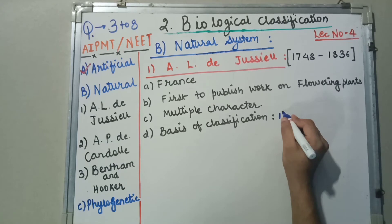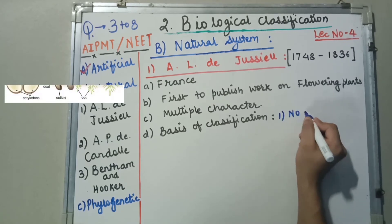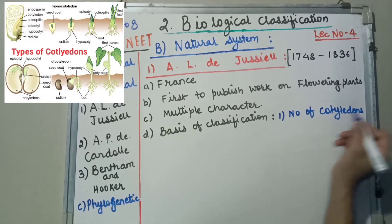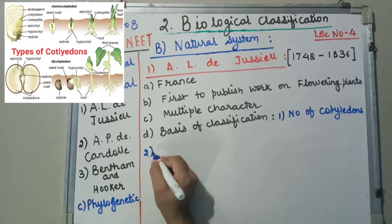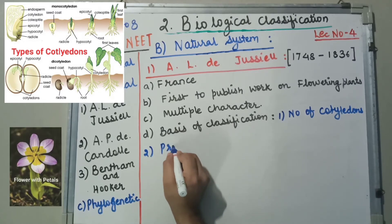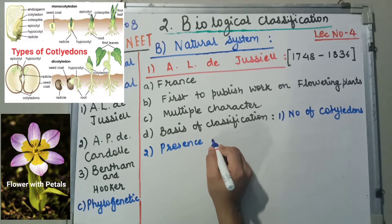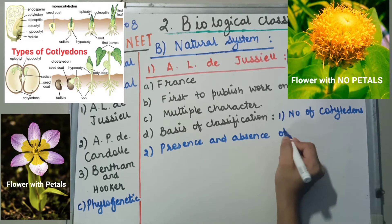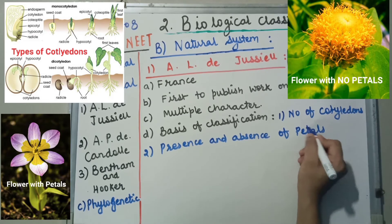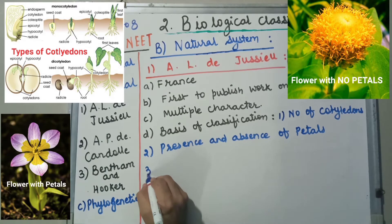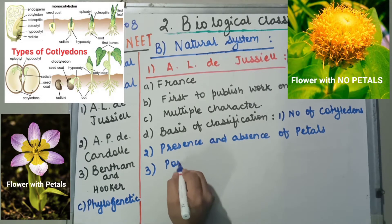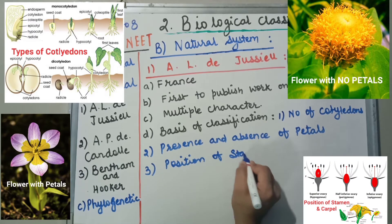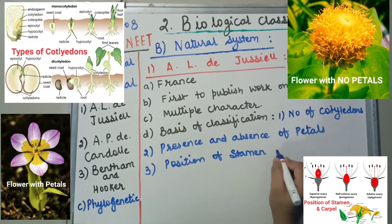The basis of classification: first was number of cotyledons. The second character he considered is presence and absence of petals. Third, position of stamen and carpel.